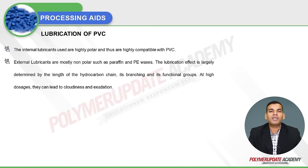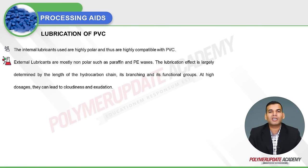For PVC lubrication, two forms are incorporated. Internal lubricants used are highly polar and thus highly compatible with PVC. External lubricants are mostly non-polar, such as paraffin and polyethylene waxes. The lubrication effect is largely determined by the length of the hydrocarbon chain, its branching, and the functional groups present. At high dosages, they can lead to cloudiness and exudation.